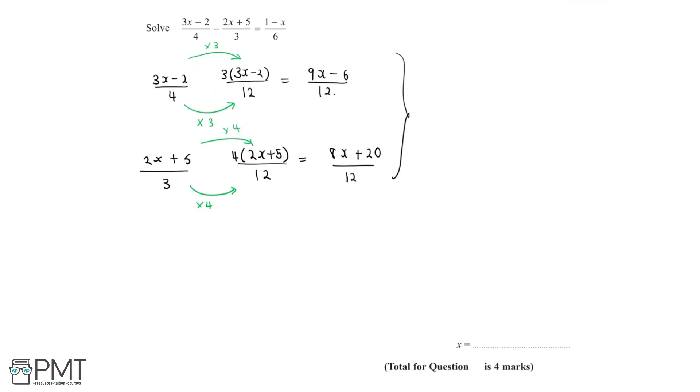Since we now have a common denominator, we can plug this back into the original equation. We can say 9x minus 6 over 12 take away 8x plus 20 over 12 is equal to 1 minus x over 6. And we can rewrite the first fraction as 9x minus 6 minus 8x plus 20 all over 12 equals 1 minus x over 6.